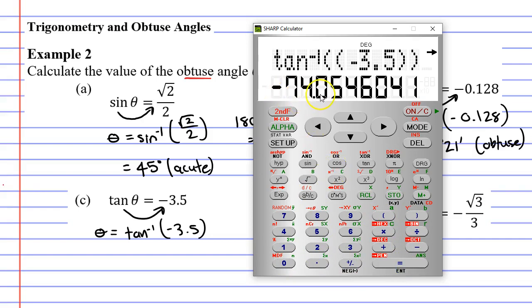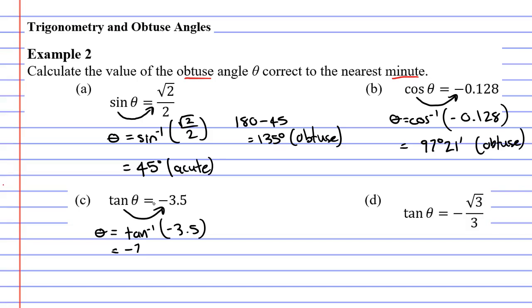And we get negative 74 point something. So we need to put it in degrees and minutes. The question is asking us to do it correct to the nearest minute. And we get negative 74 degrees, 3 minutes. We don't need to round this one up. So negative 74 degrees and 3 minutes.